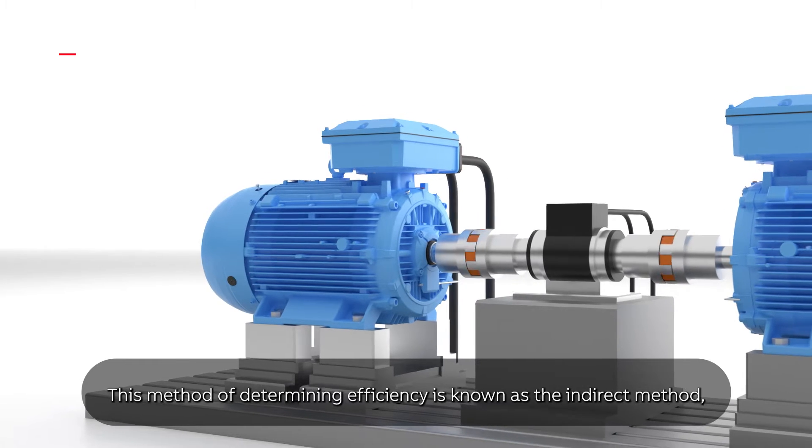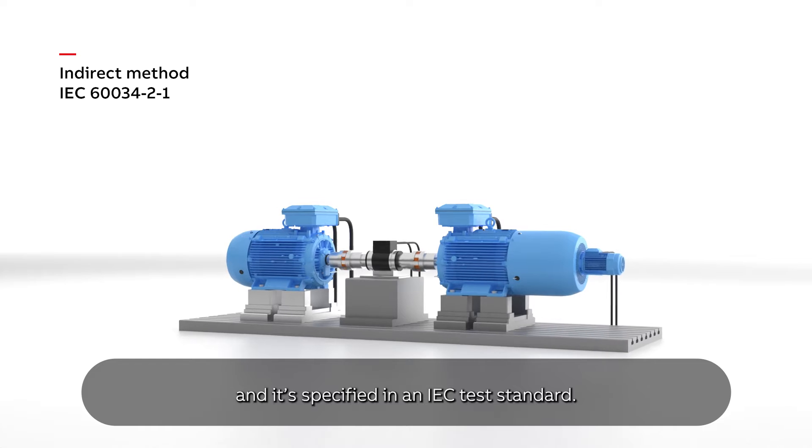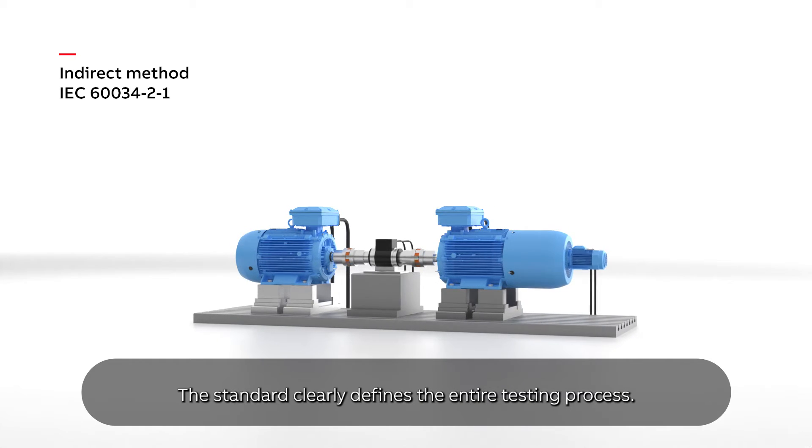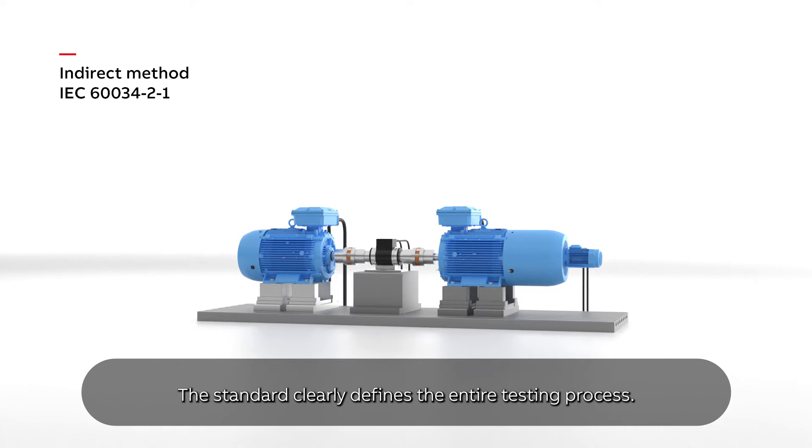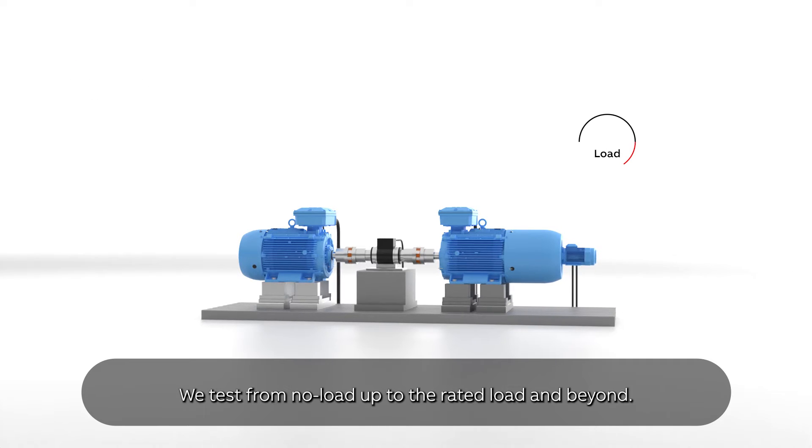This method of determining efficiency is known as the indirect method and it's specified in an IEC test standard. The standard clearly defines the entire testing process. We test from no load up to the rated load and beyond.